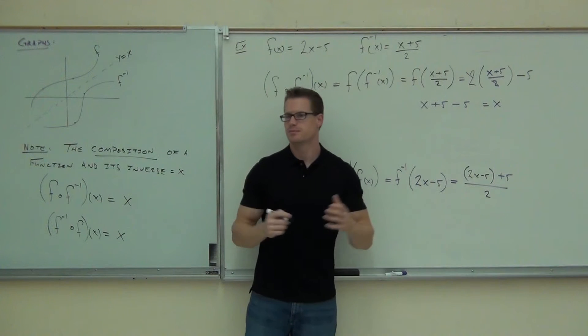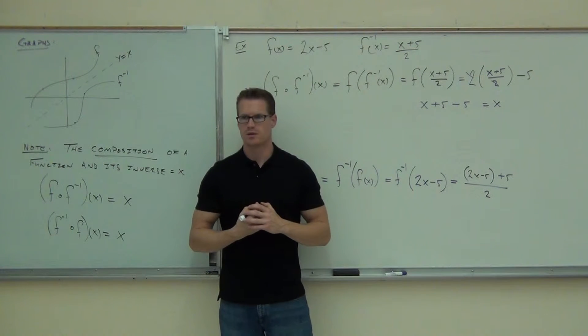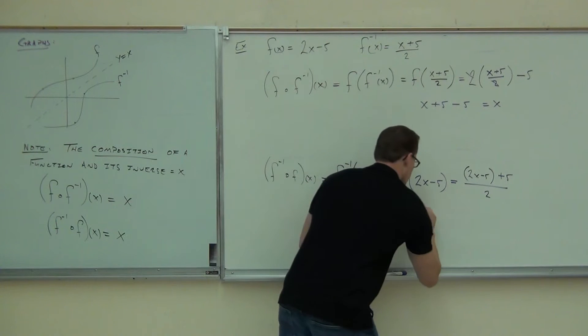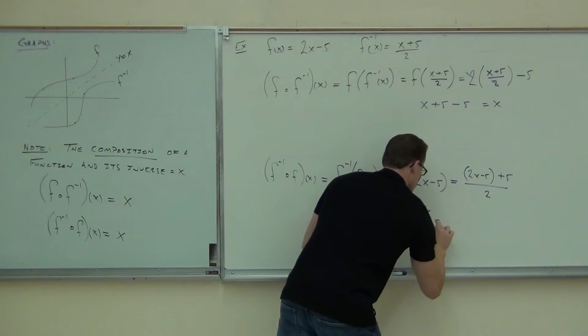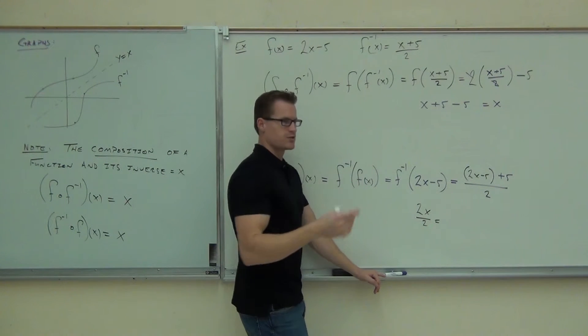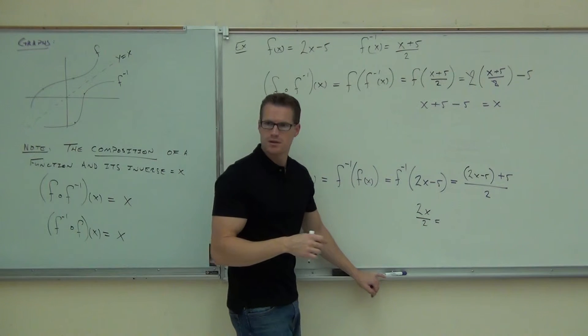What happens here? The fives cancel each other. The twos are gone. The fives are gone. We're going to get 2x over 2. Of course, if we have 2x over 2, how much is that going to get us? x.